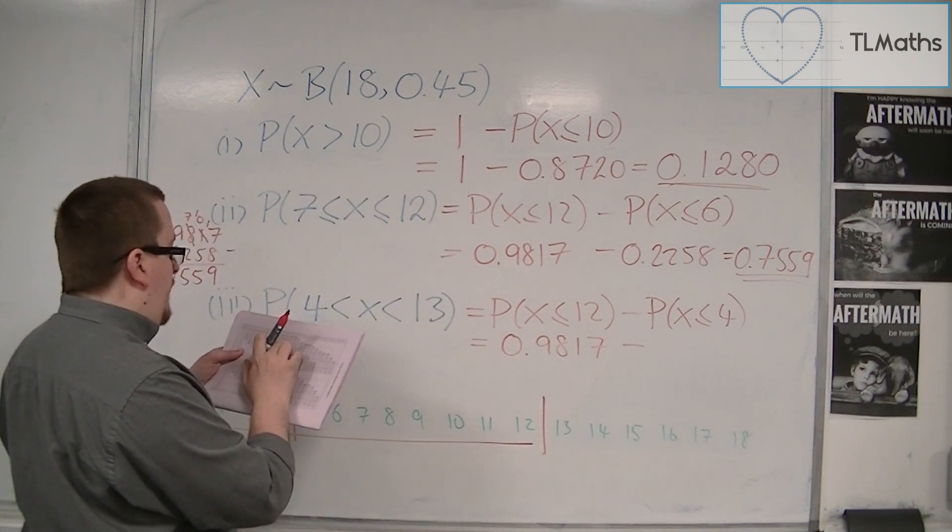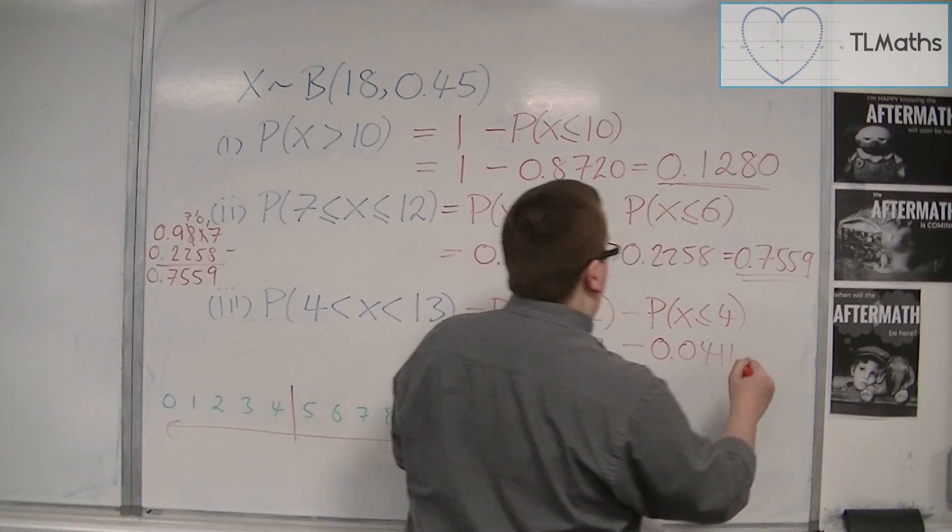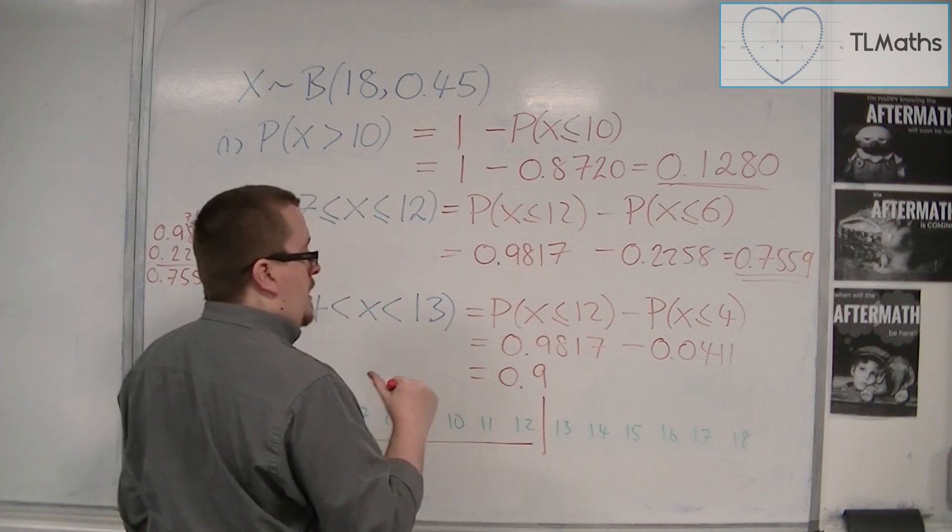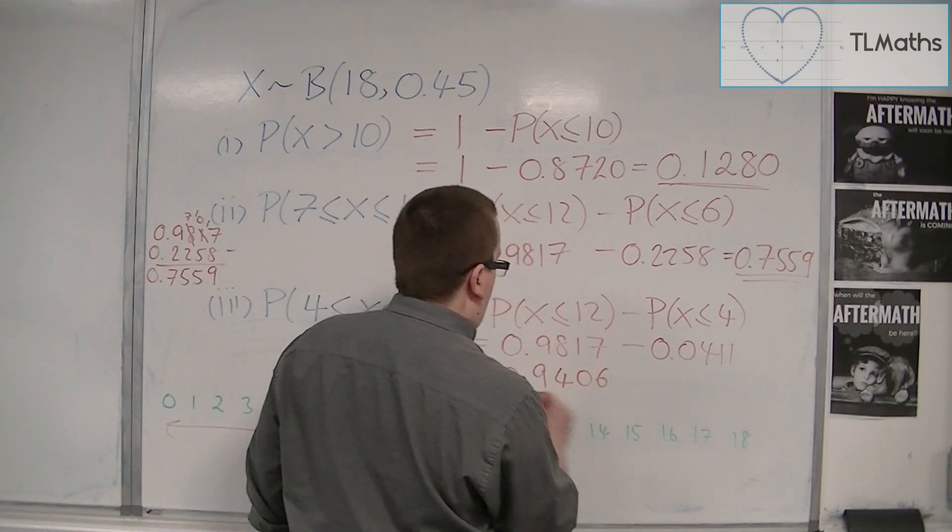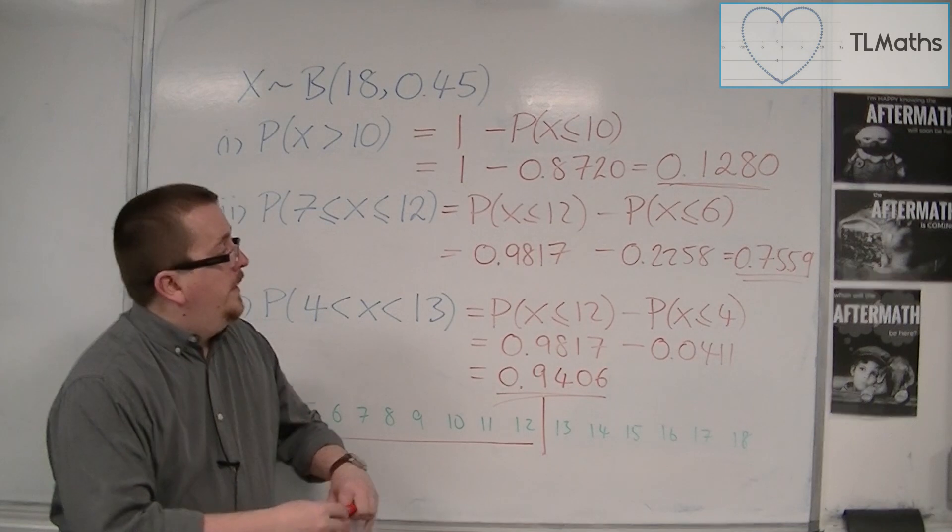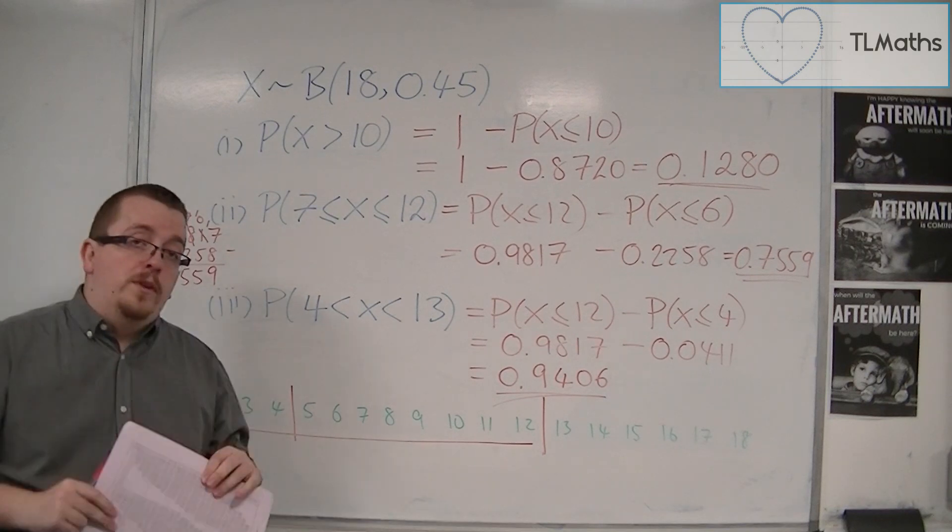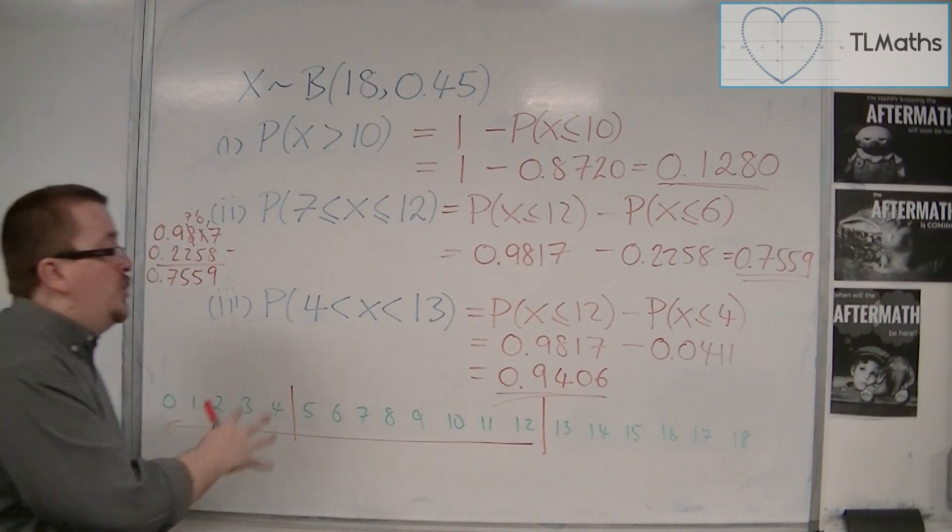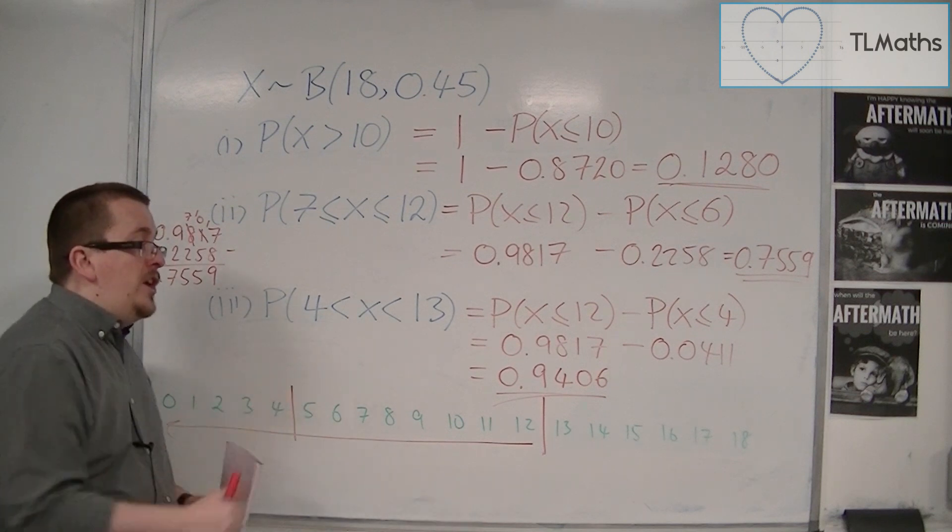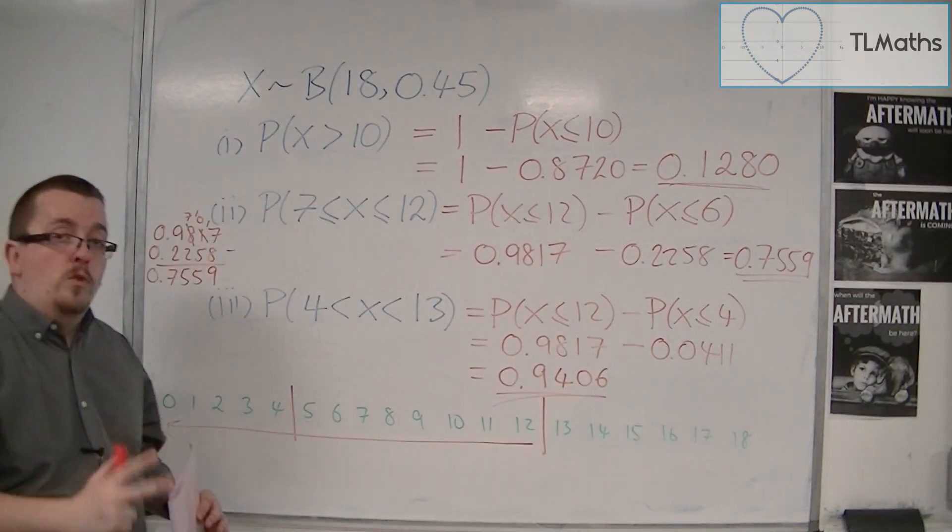4 I'm going to have to look up. So 0.45 and 4 is 0.0411. So that will be 0.9406, I think. Yeah, that looks about right. So that's how quickly we can do these probabilities. Having a number line drawn out can really help visualise which numbers you need to look up in the table. I would suggest it if you're not able to go directly from this line to this line. Maybe a number line will help with that.